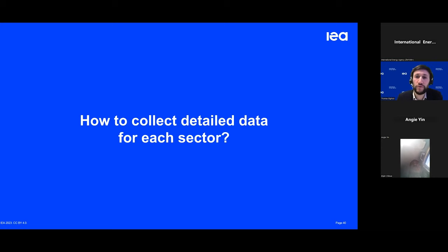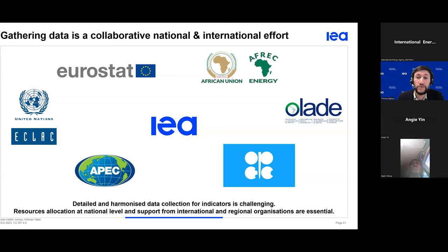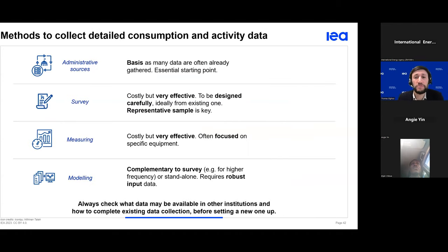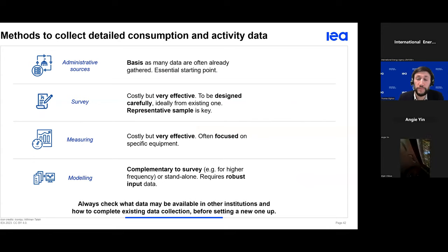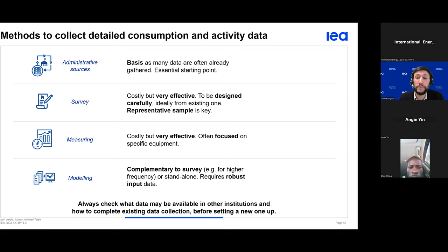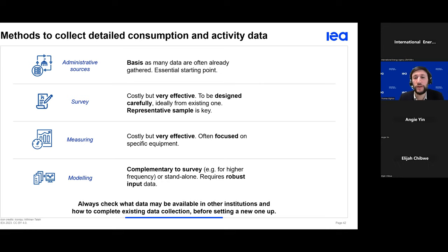Gathering and estimating energy consumption by end-use at national level and developing efficiency indicators is very challenging — it requires the right resources at national level and the support of international and regional entities. Data collection can be categorized into four main methods: administrative sources, which are often a pre-existing basis needing institutional arrangement and methodological alignment; surveys, which are costly but very effective for specific issues; measuring, which is powerful once in place but needs dedicated equipment and covers limited end-uses; and modeling, which requires solid data but allows bridging gaps, for instance converting car sales into car stocks.